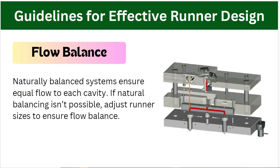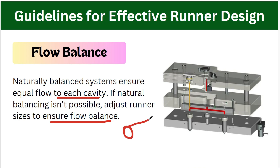Next is flow balance. The runner pattern should be designed so that it fills all cavities at the same time in multi-cavity mode. A natural balancing system ensures equal flow to each cavity. If natural flow is not possible, we need to adjust the runner size to ensure flow balance. In that case we can also use a variable diameter runner — for example, smaller in one section and larger in another — so that all cavities fill at the same time.